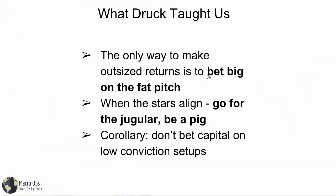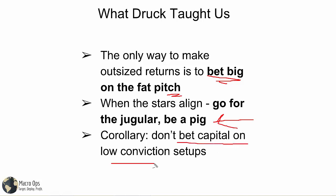Druckenmiller also gave us the key to how to make long-term outsized returns, and that is betting big on the fat pitch. When the stars align, you've got to go for the jugular. You have to be a pig and bet big when the great opportunities come up, because they're pretty rare. The corollary to that is don't bet capital on low conviction setups.